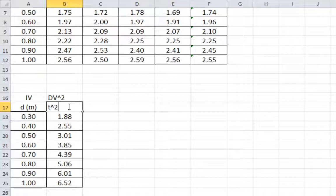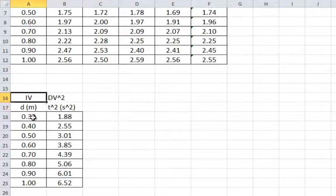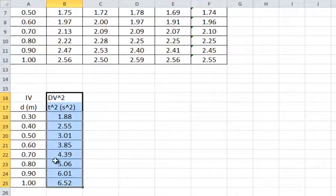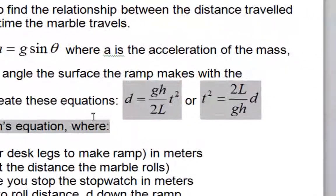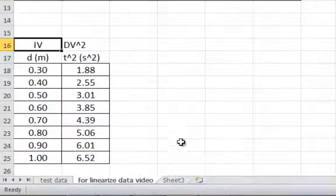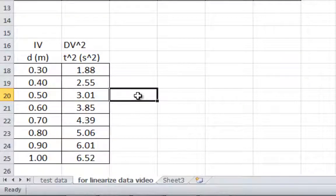That's time squared. The units for this are seconds squared. Now we have the distance and the time squared because the formulas that were given to us had distance and time squared. Now we're ready to make a straight line graph.